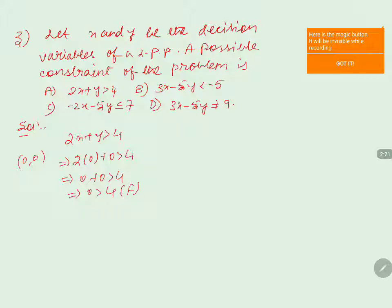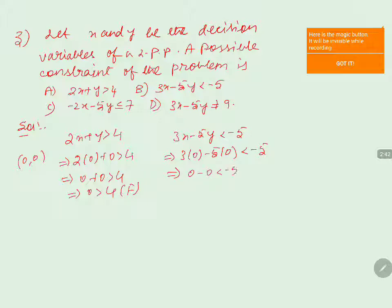For option 2, which is 3x minus 5y less than minus 5, substituting the origin: 3 into 0 minus 5 into 0 less than minus 5 gives 0 less than minus 5. But 0 is not less than minus 5, so this is also false. Origin does not lie in this region either.